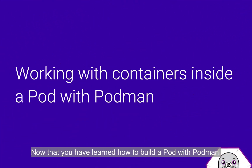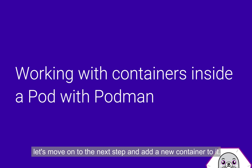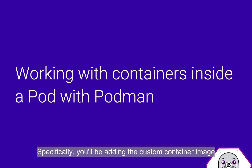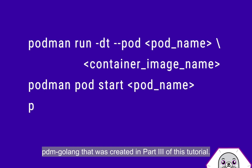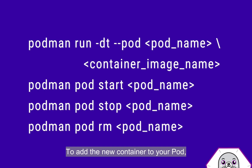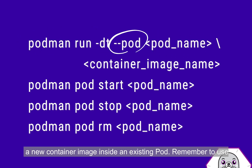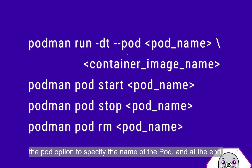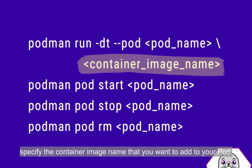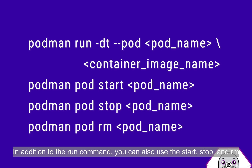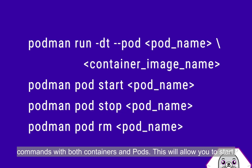Now you have learned how to build a pod with Podman. Let's move on to the next step and add a new container to it. Specifically, we'll be adding the custom container image created in part 3 of this tutorial. To add a new container to your pod, use the podman run command with the --pod option to specify the name of the pod, and then specify the container image name you want to add. In addition to the run command, you can also use the start, stop, and rm commands with both containers and pods.